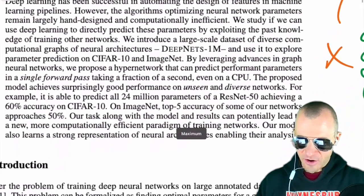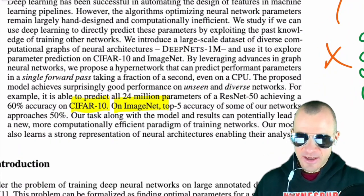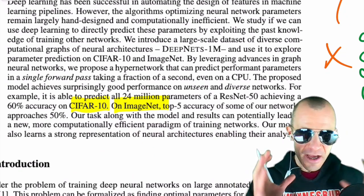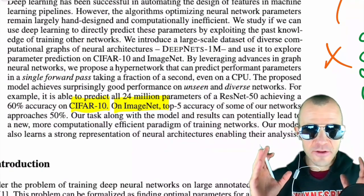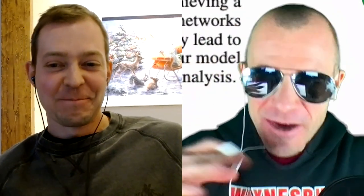One correction: the hyper network doesn't take data as input at test time. It's trained on a specific dataset, say CIFAR-10 or ImageNet, but at test time it only takes a network architecture as input. That's why it cannot generalize to other datasets. So you release one network for CIFAR-10 and one network for ImageNet.